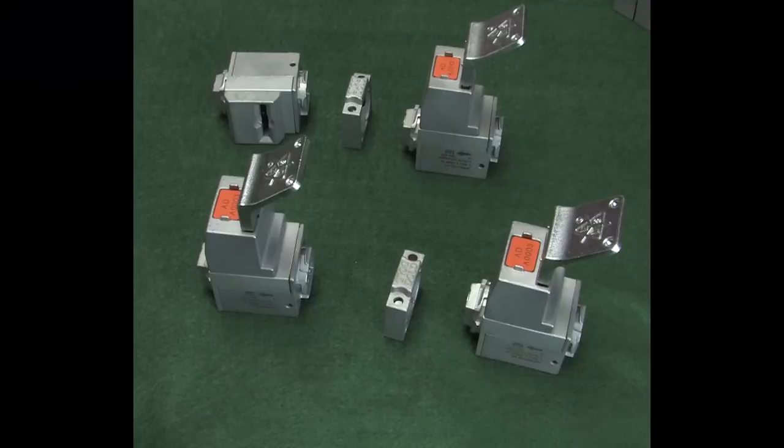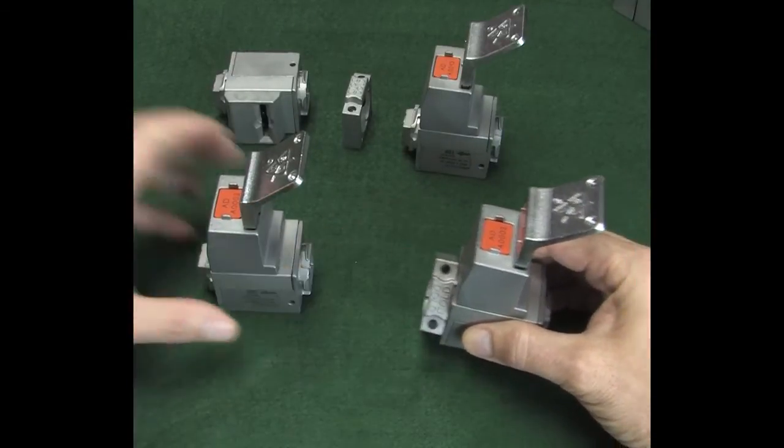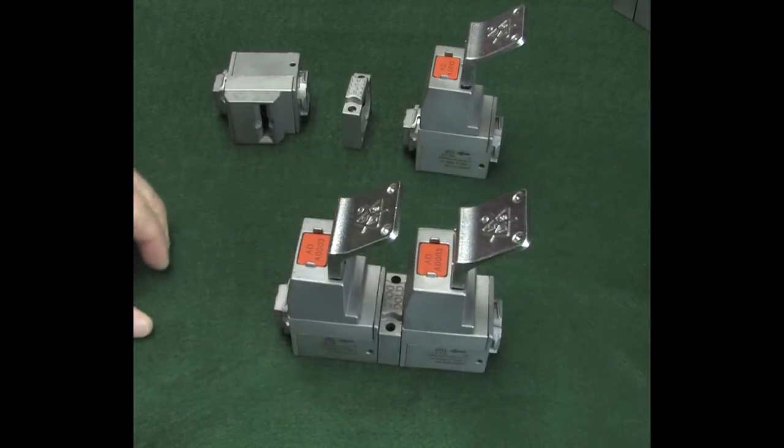Assembling the modules is easy. Just place the locking ring on top, rotate it 45 degrees, drop the next module on top of that, and rotate the locking ring back. Done.